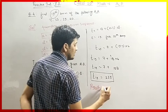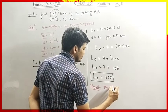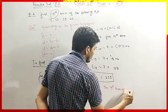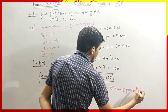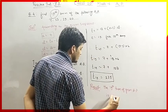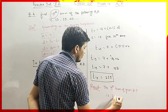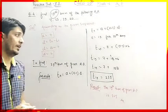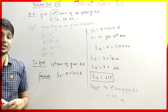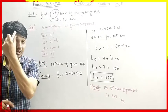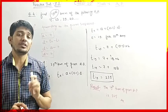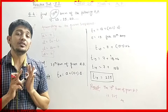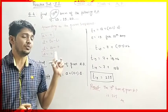The 19th term of the given Arithmetic Progression is 115, and that is our answer. This is the way we solve the fourth question. The third as well as the fifth question are similar to this, and we have to solve them on the basis of the fourth one.